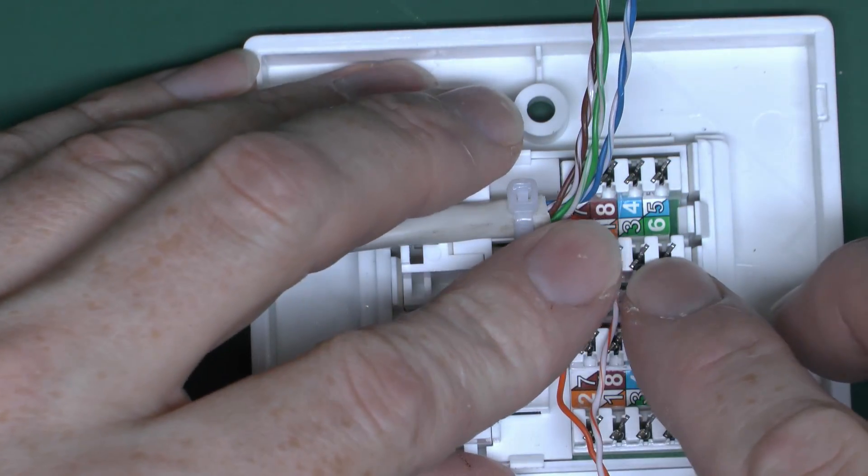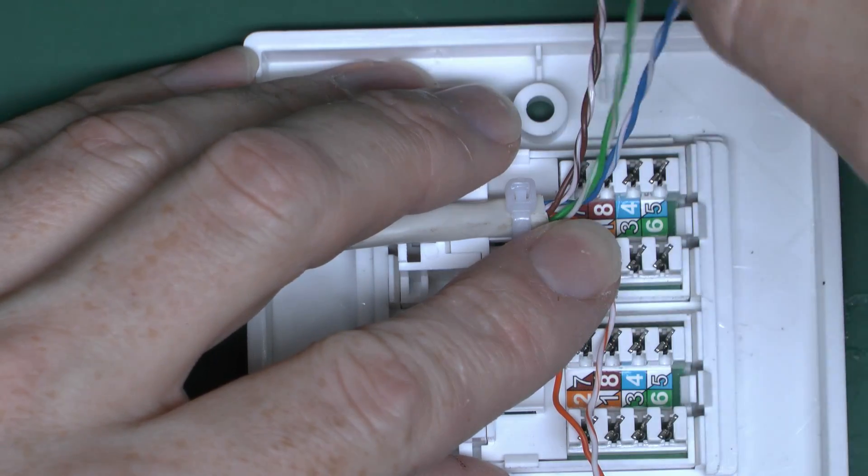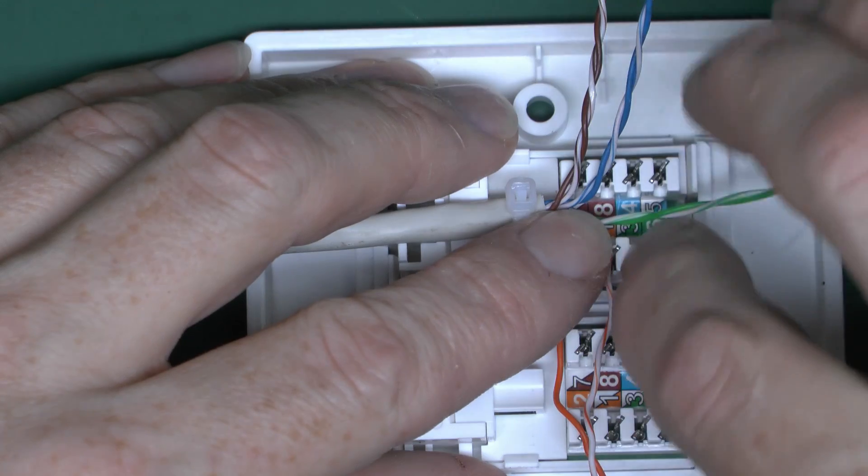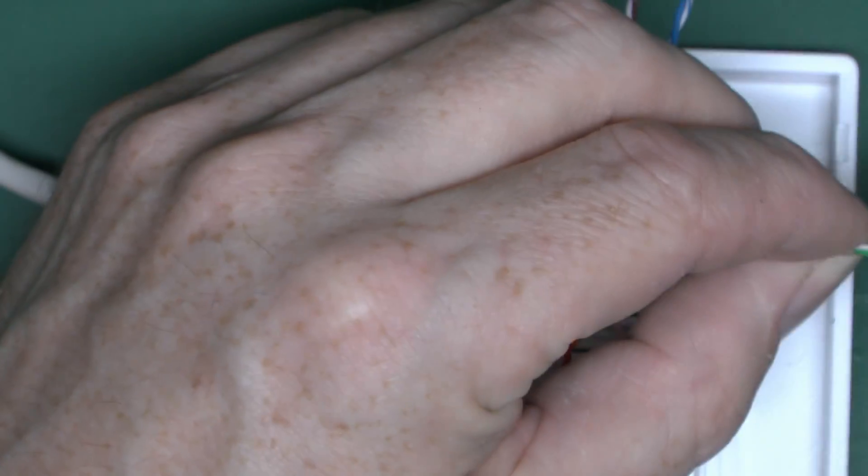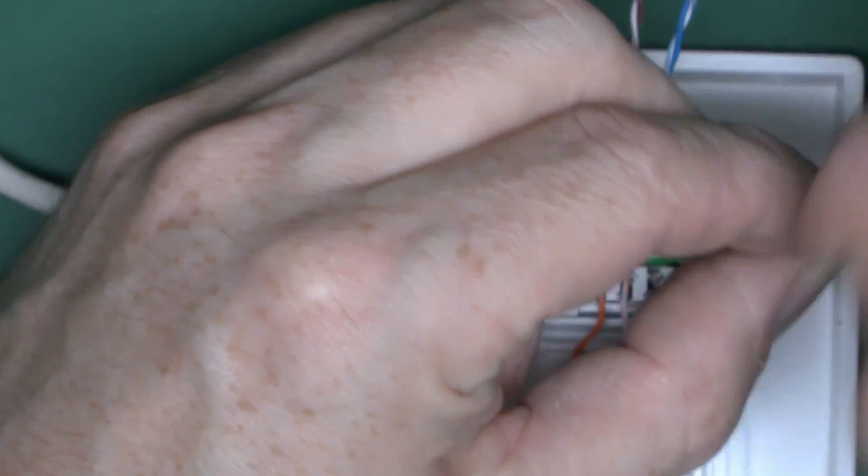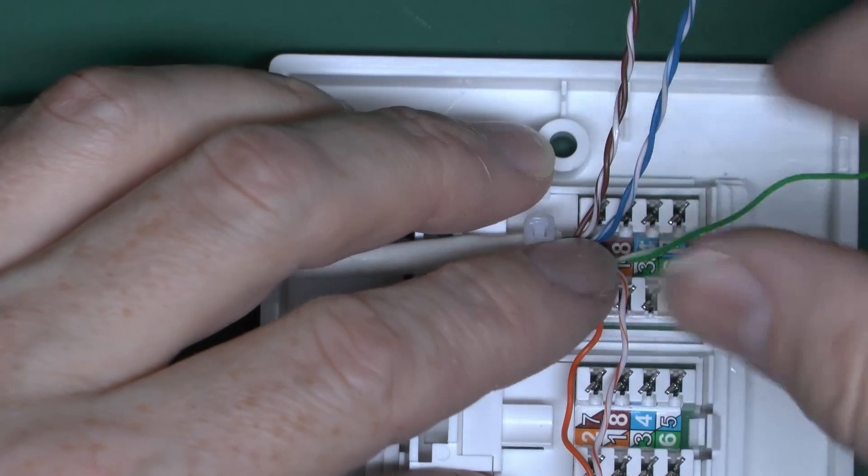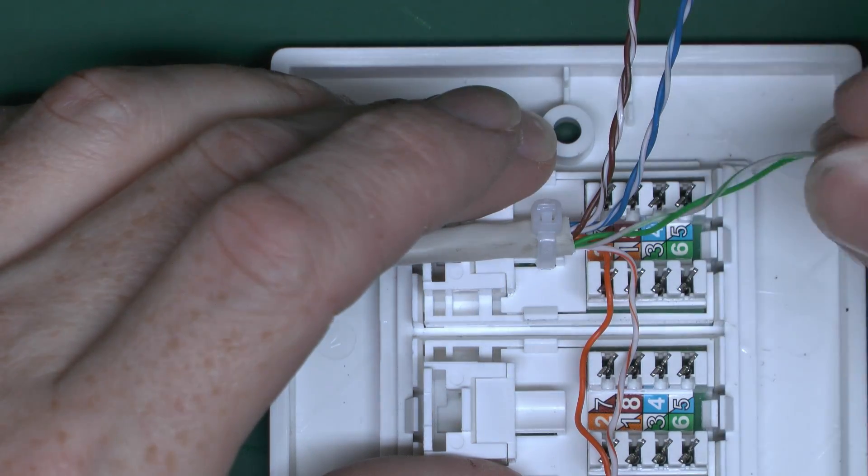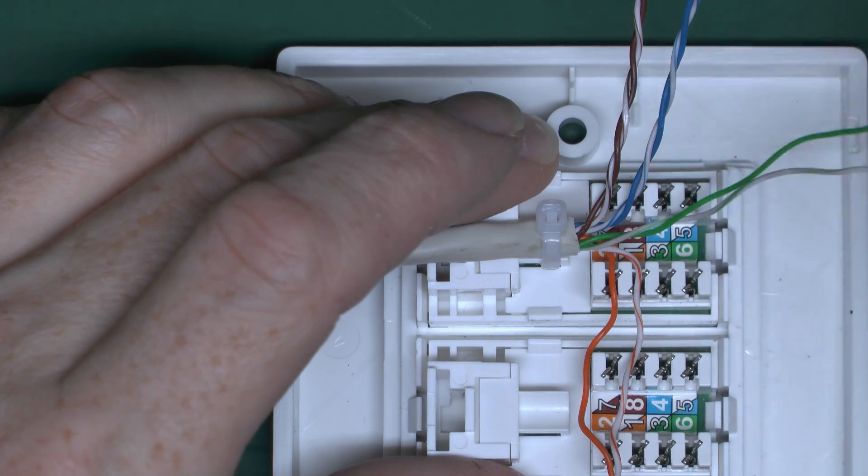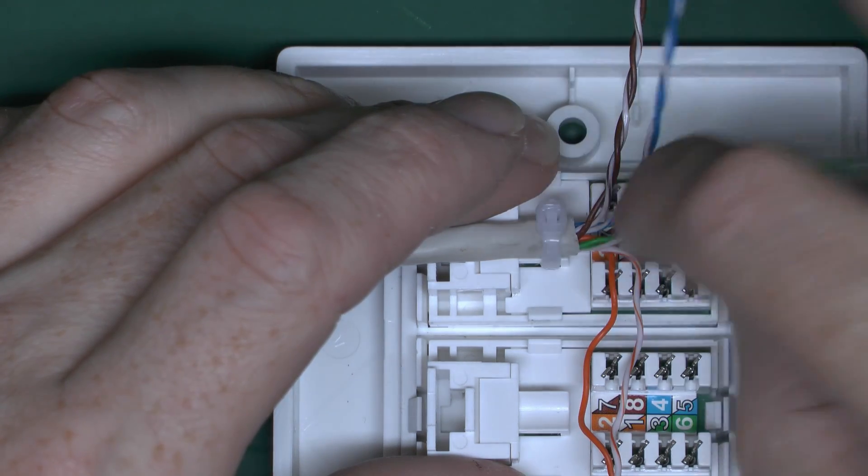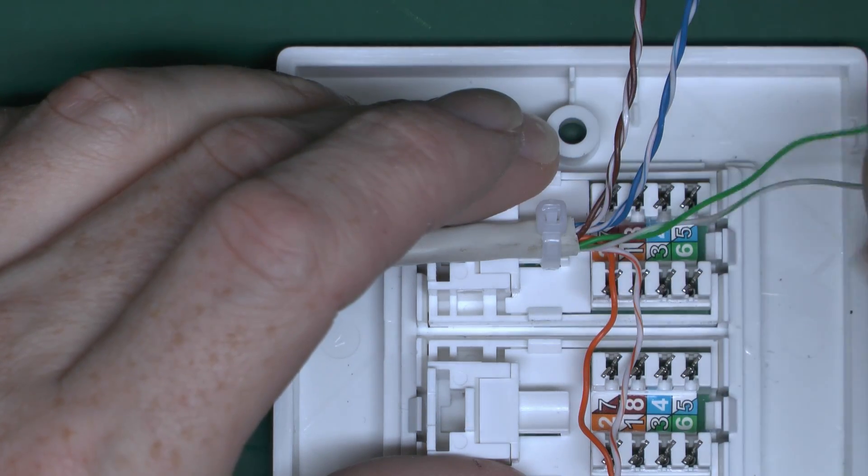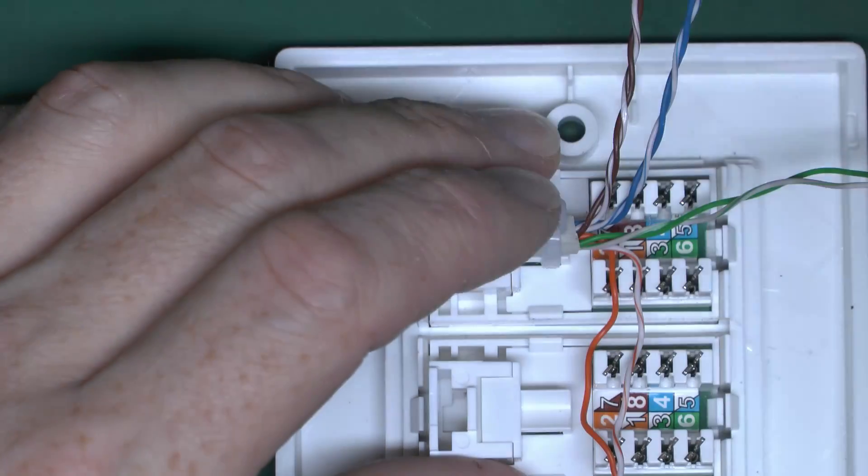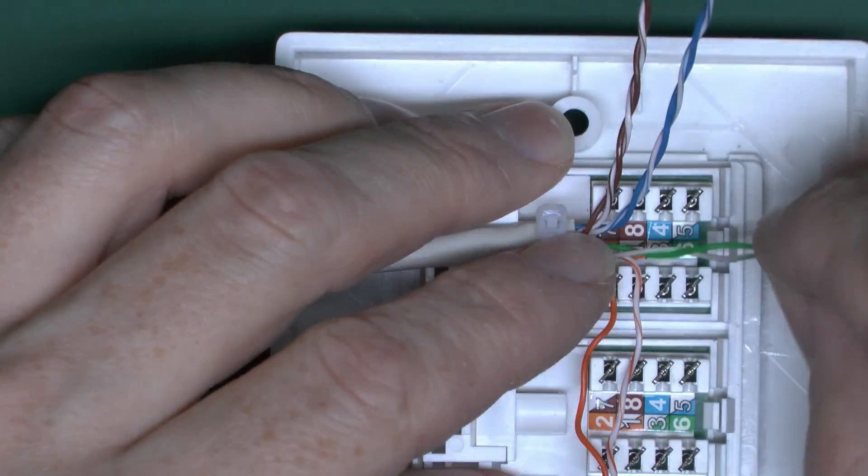At the top there we've got the green one, so the green will come across here. You want to maintain the twist basically up to that point, and then just have that coming across to the actual terminals. As I said in the previous video, the twist here makes sure the signal is kept within the individual pair, and there are different rates of twists so you don't get interference between the various pairs.